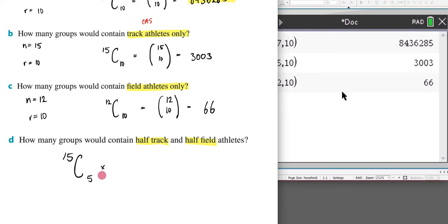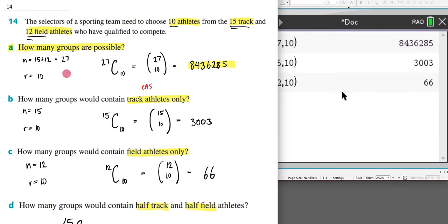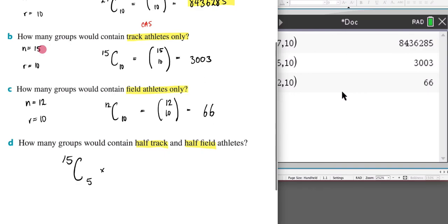I'm now going to multiply that by half the students who are field athletes. So my field athletes are 12 students, so that means I have 12 students and I have five positions for them to take. And by multiplying them together I'm going to be figuring out how many groups would contain half track and half field.